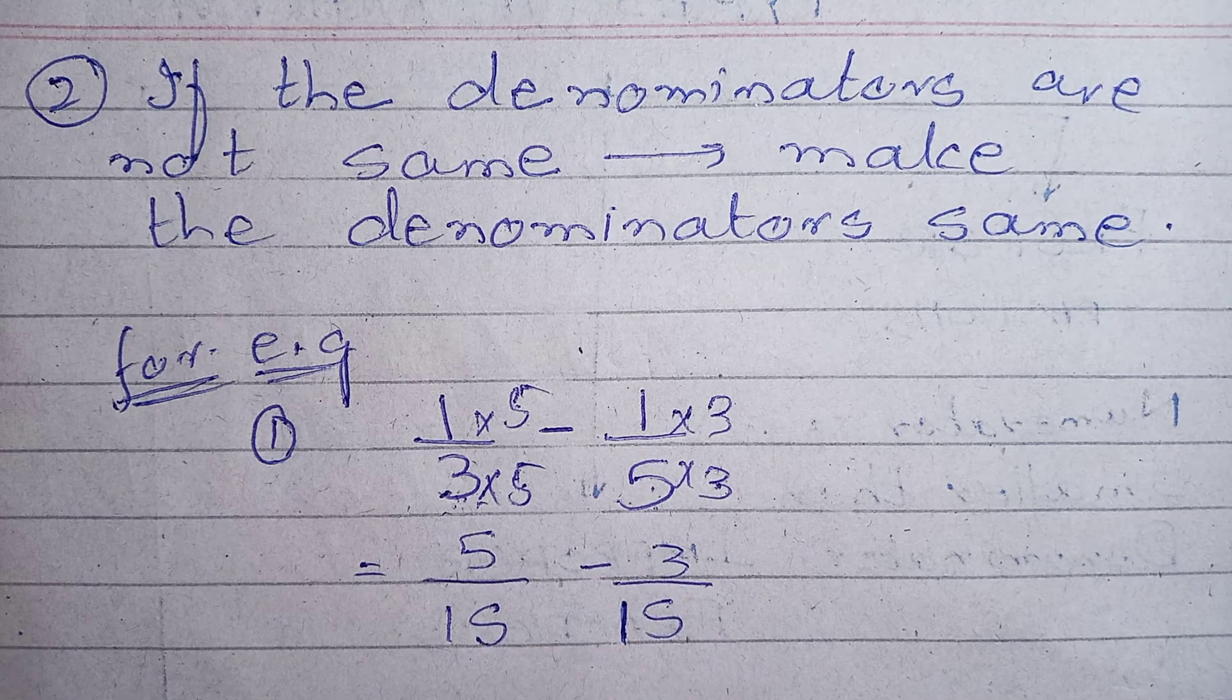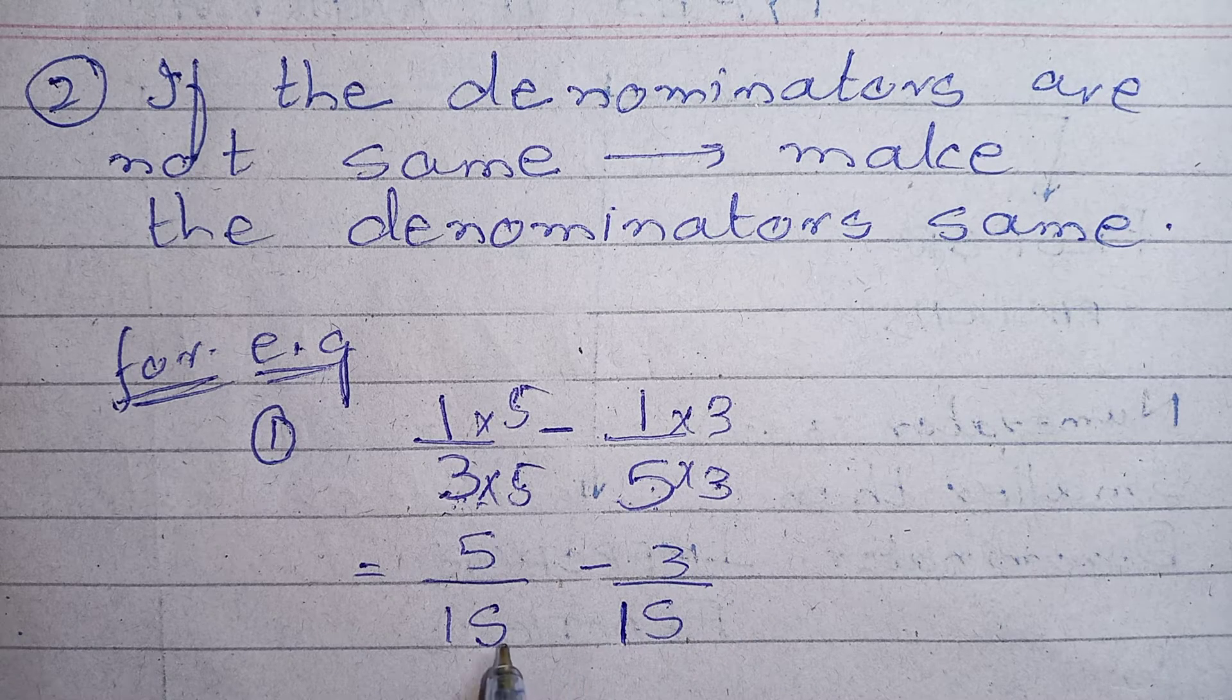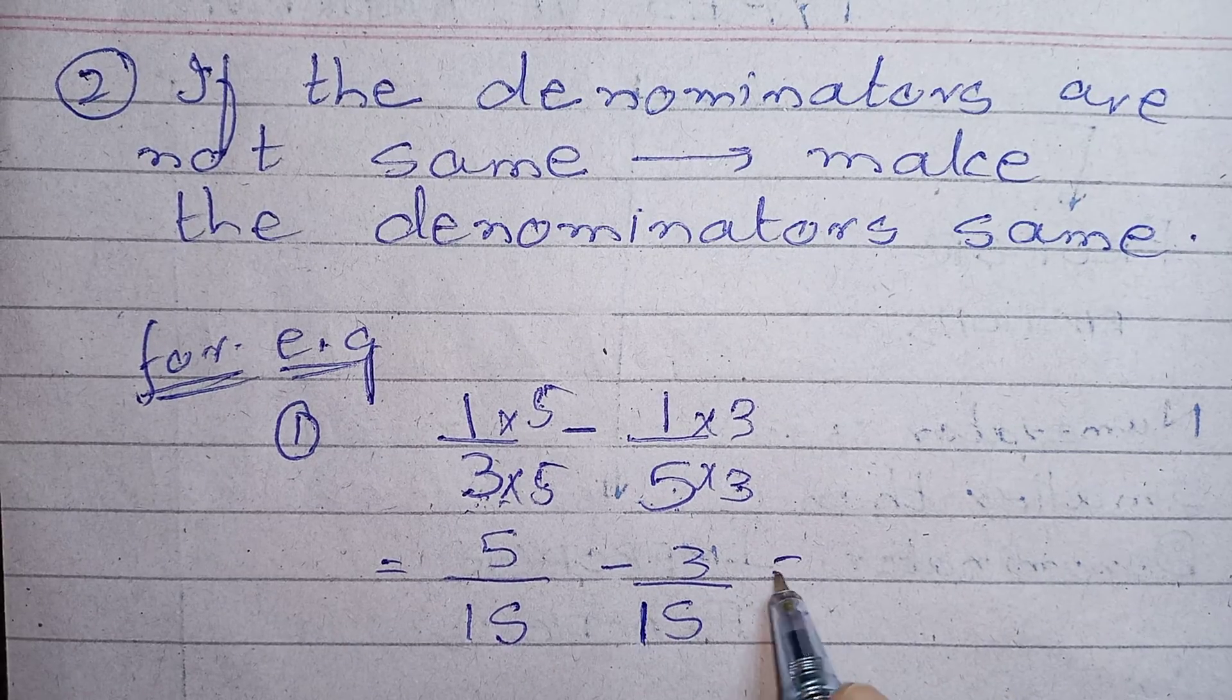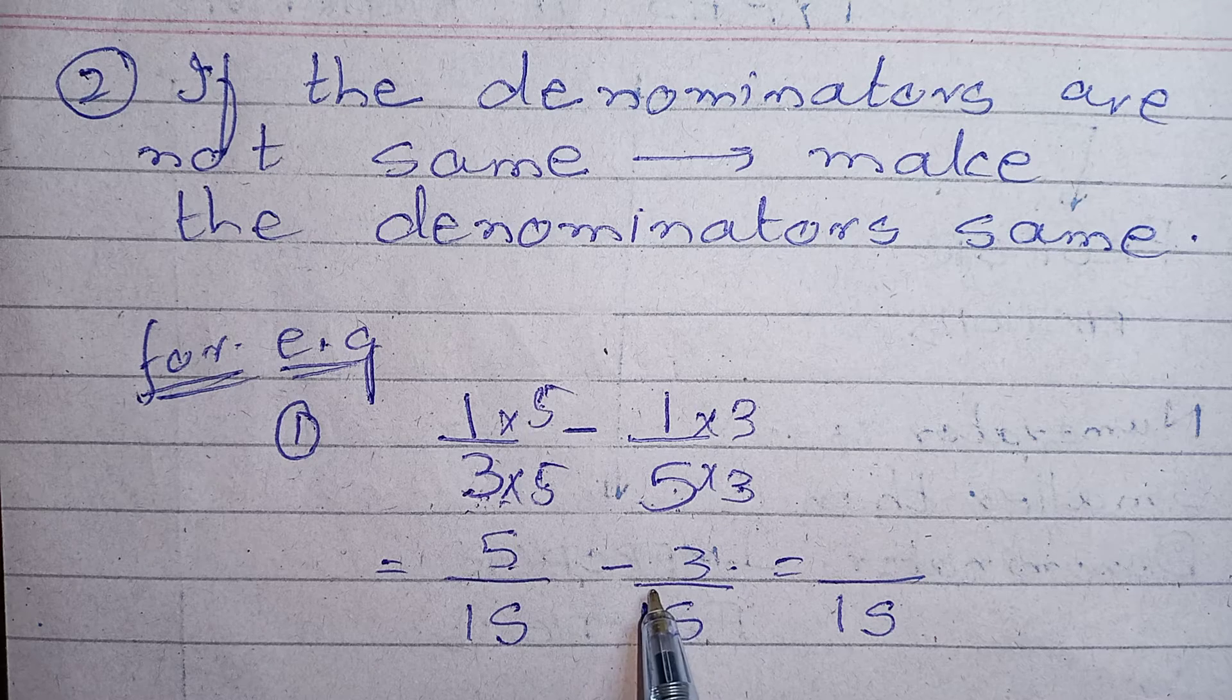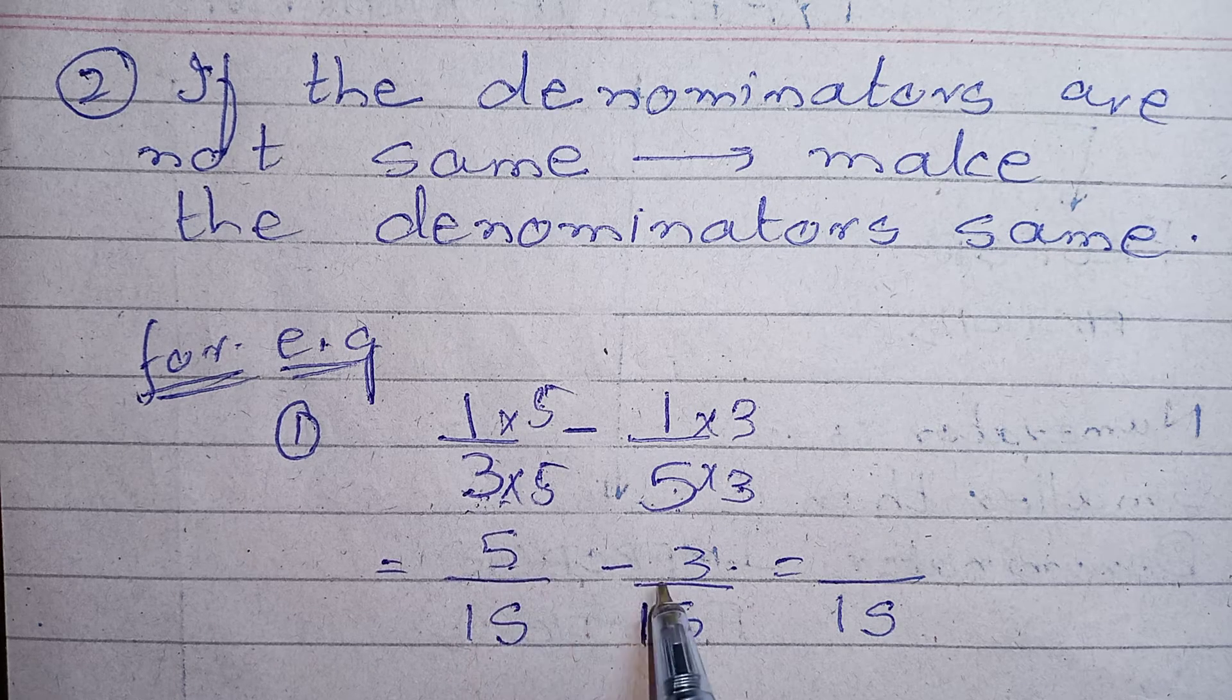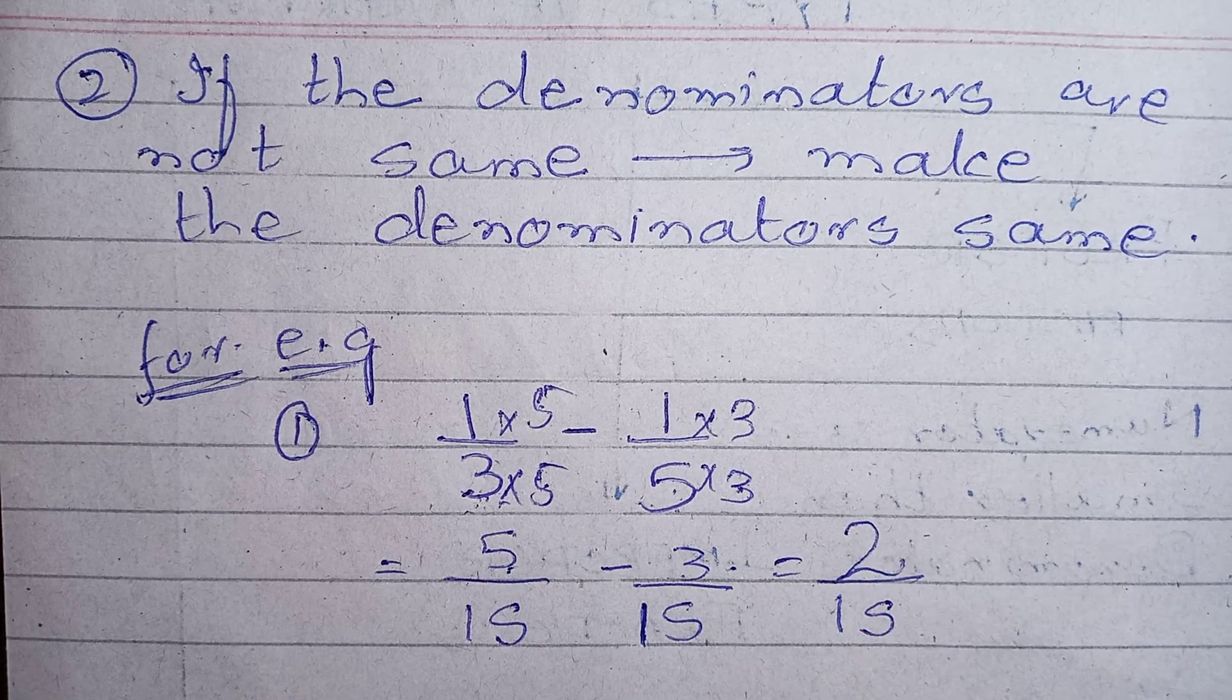Now this is which type of question? The first type which we did. If the denominators are same, keep the denominator as it is and subtract or add whatever is required. So here we need to subtract 3 from 5. Your answer is 2.